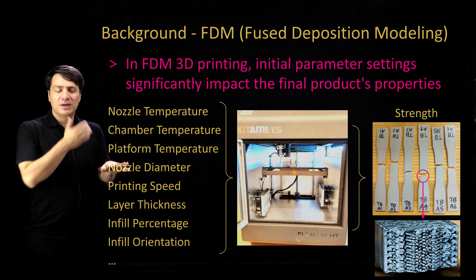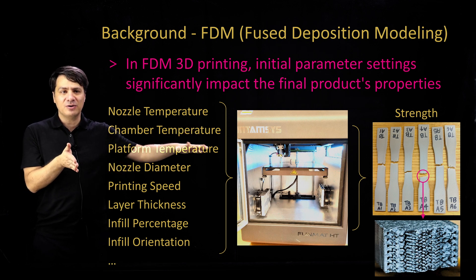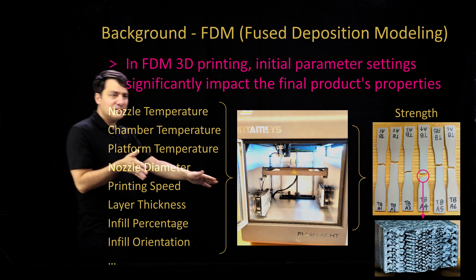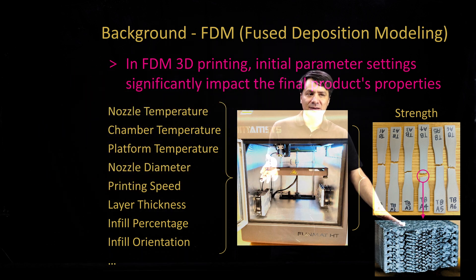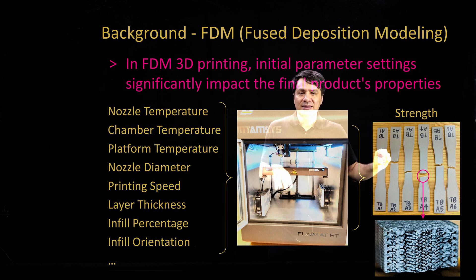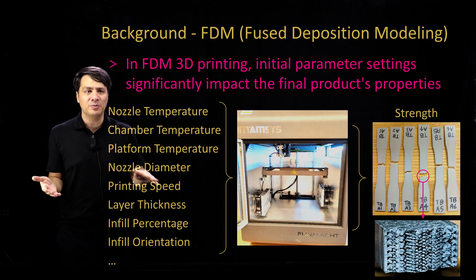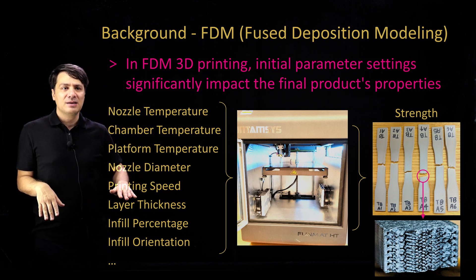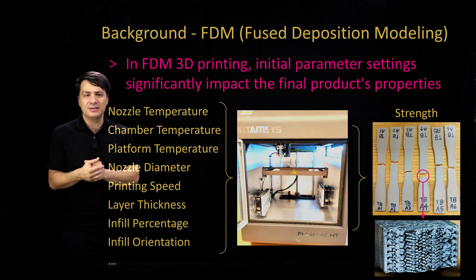The diameter of the nozzle — 0.2 mm, 0.3 mm, 0.4 mm — has an effect on quality. The thickness of the layers also matters. You can look at the cross-section of the failed specimen here and see those layers. These are standard ASTM tensile specimens that are broken. The layer thickness is a parameter you can set at the beginning, like 0.5 mm, 0.4 mm, or 1 mm. Printing speed — how fast you're placing the layer — also affects quality.